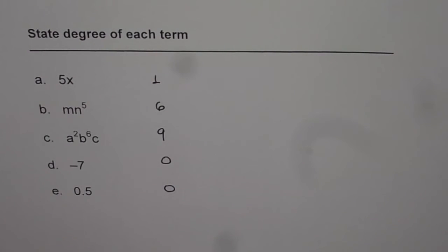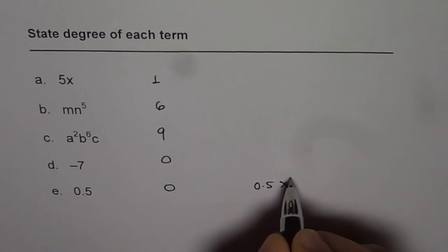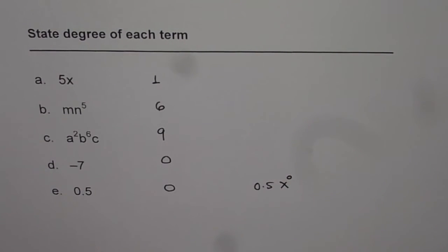Remember that part. Think constant as, let us say 0.5 as x to the power of 0. Anything to the power of 0 is 1. So that gives you the degree for a constant. I hope it makes things clear. Thank you and all the best.